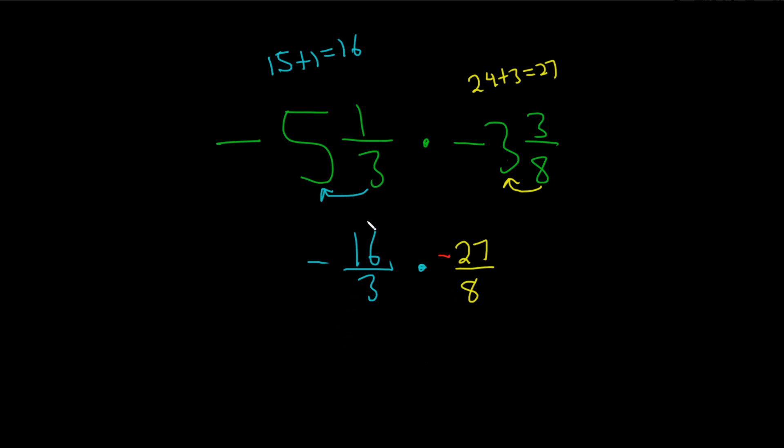Now we're going to try to simplify, if possible. So we can look at the diagonal terms. Looks like 8 and 16 can be simplified. So 8 goes into 8 one time. So you cross out the 8 and put a 1. And 8 goes into 16 two times. So you cross out the 16 and put a 2.